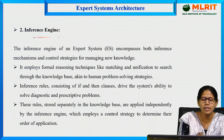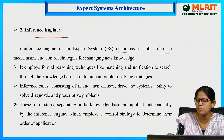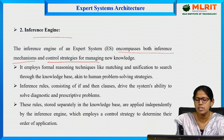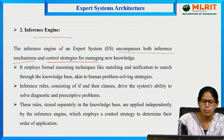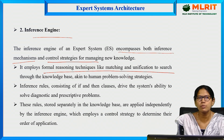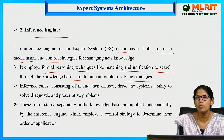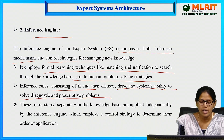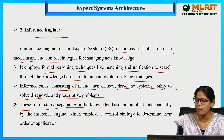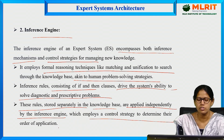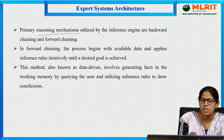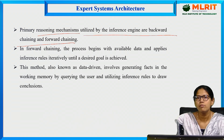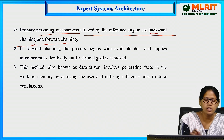The second component is the inference engine. The inference engine of an expert system encompasses both inference mechanism and control strategies for managing new knowledge. It employs formal reasoning techniques like matching and unification to search through the knowledge base, akin to human problem-solving strategies. Inference rules consisting of if-then clauses drive the system's ability to solve diagnostic and predictive problems. These rules are stored separately in the knowledge base and applied independently by the inference engine. The two types of control strategies are backward chaining and forward chaining.